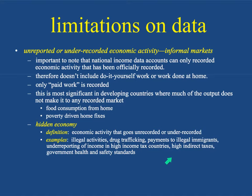Likewise with high taxes — if you buy something in cash instead of on a credit card and the seller gives you a deal, it's because cash isn't traceable through a bank, so the income doesn't have to be reported. That creates hidden income, which limits the reliability of the data required to calculate national income.